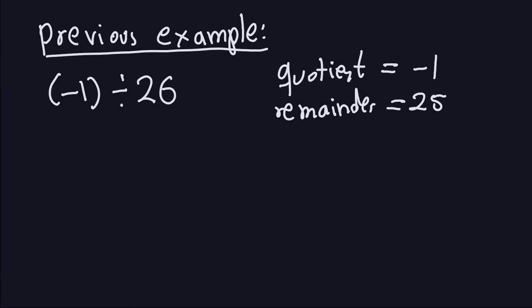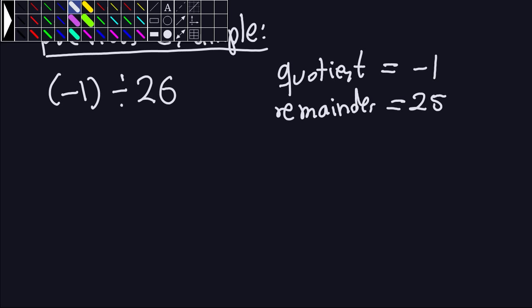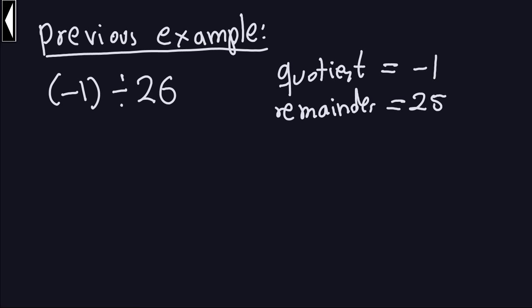In the previous video, we talked about this example: negative 1 divided by 26. We saw that the quotient is negative 1 and the remainder is 25. I didn't actually explain how you get this number — how do you get the quotient to be negative 1. I will do that in this video.